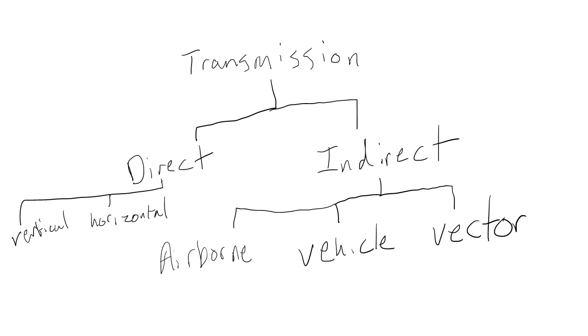Direct transmission is either horizontal or vertical. Indirect transmission occurs through airborne transmission, vehicle transmission, or vector transmission.